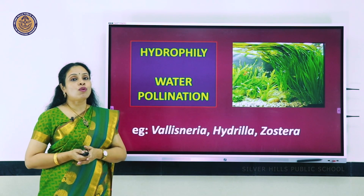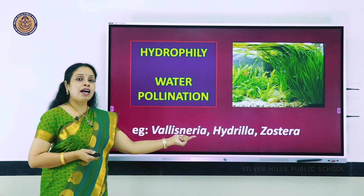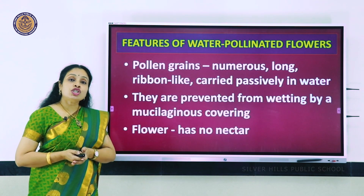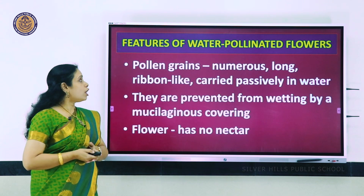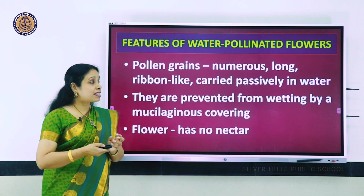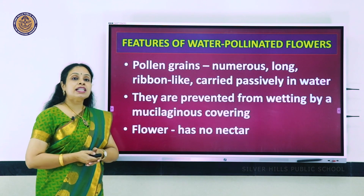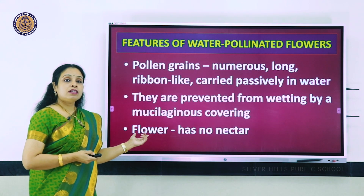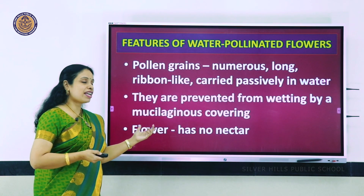Hydrophily is the term for water pollination. It is shown by Vallisneria, Hydrilla, and the seagrass Zostera. Features of water-pollinated flowers: pollen grains are numerous, long, and ribbon-like so they can be passively carried in water; they are protected from wetting by a mucilaginous covering; and the flower has no nectar - whether hydrophily or anemophily, no nectar is produced.